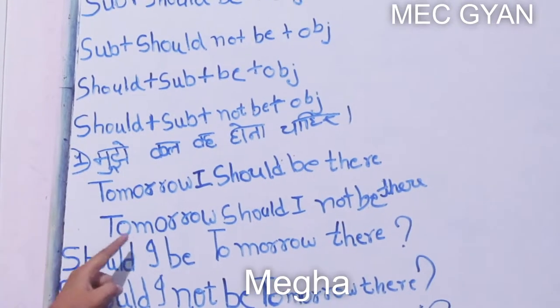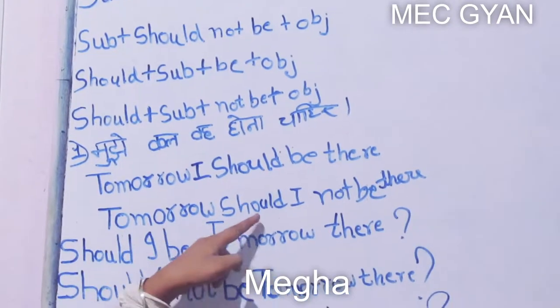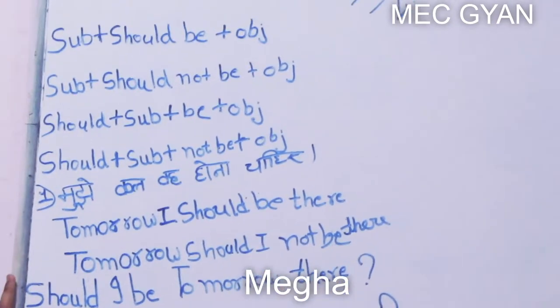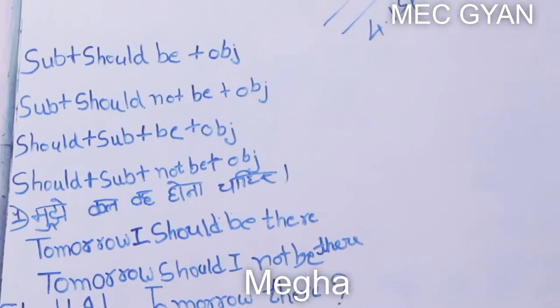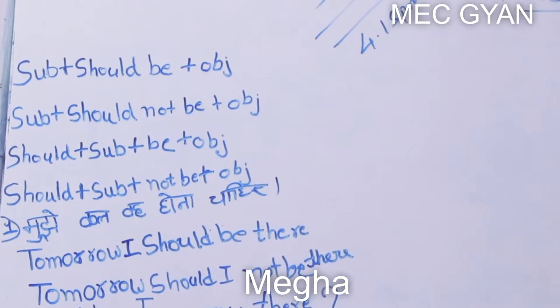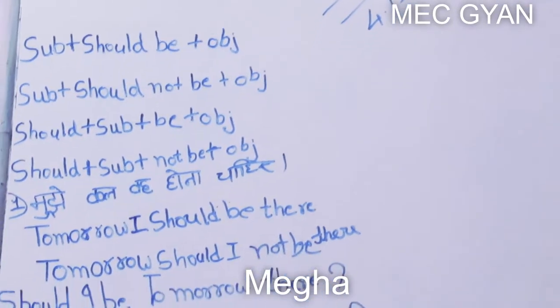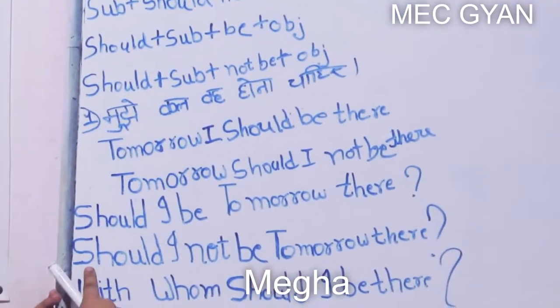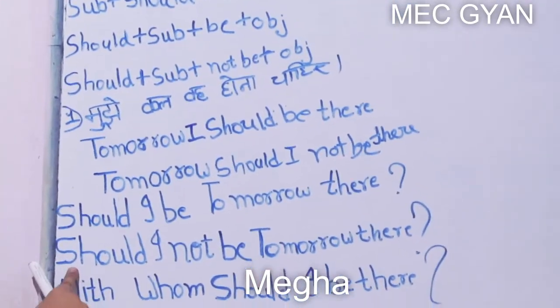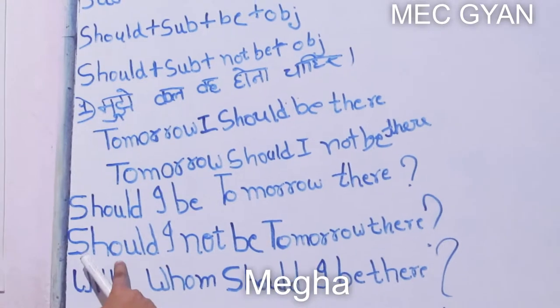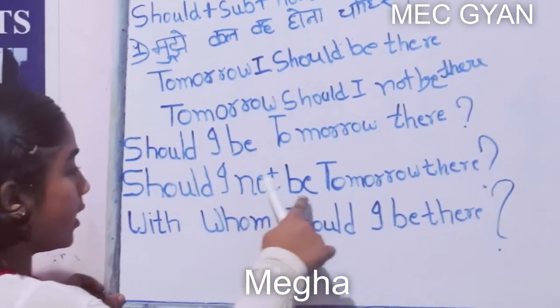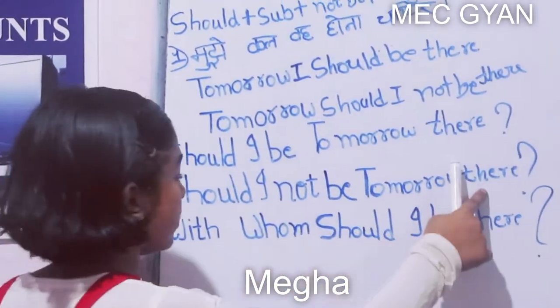Negative: Tomorrow should I not be there. Interrogative: Should I be tomorrow there. Interrogative plus negative: Should I not be tomorrow there.